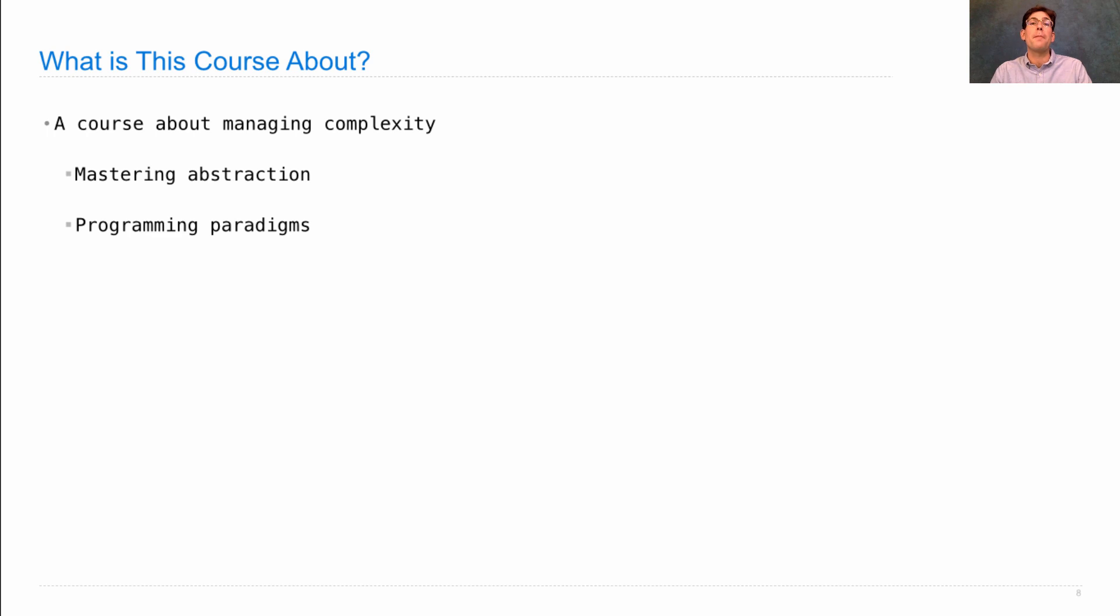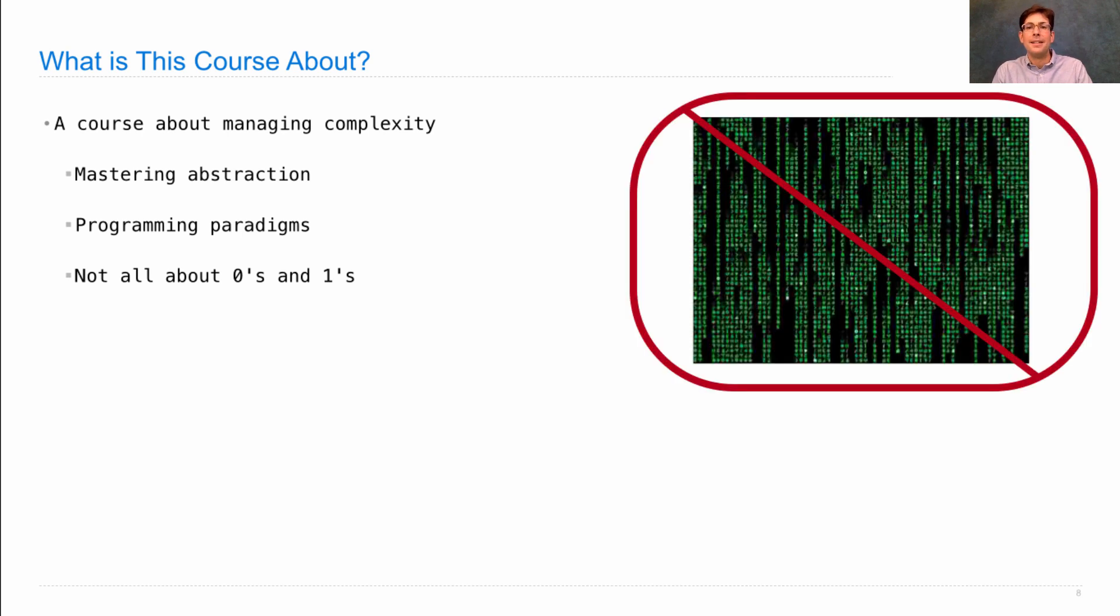The course is also about programming paradigms. So these are broad ideas of how to organize whole programs in order to take advantage of our abstractions. It's not all about the low-level details of what a computer is doing to manipulate zeros and ones. That's a common misconception about computer science. But we don't just sit around and stare at screens like the Matrix all day. Instead, what we do is express ideas in programming languages, hopefully in ways that other people can understand.